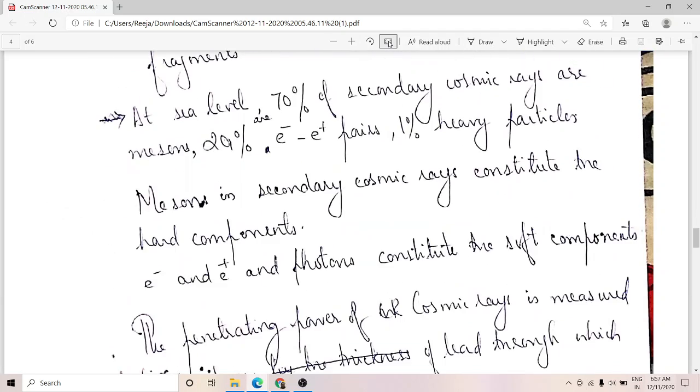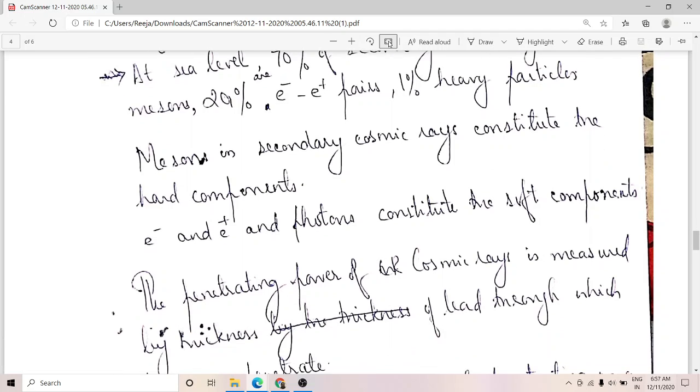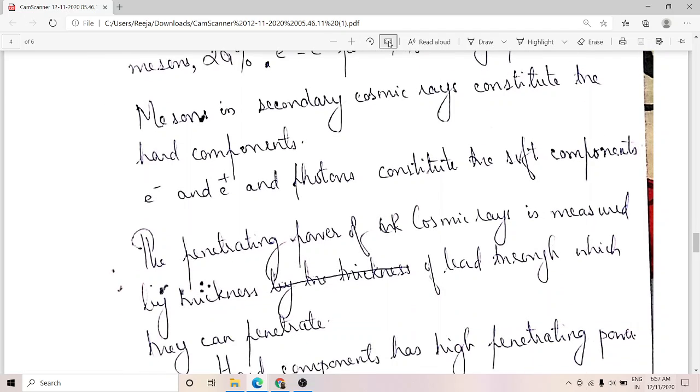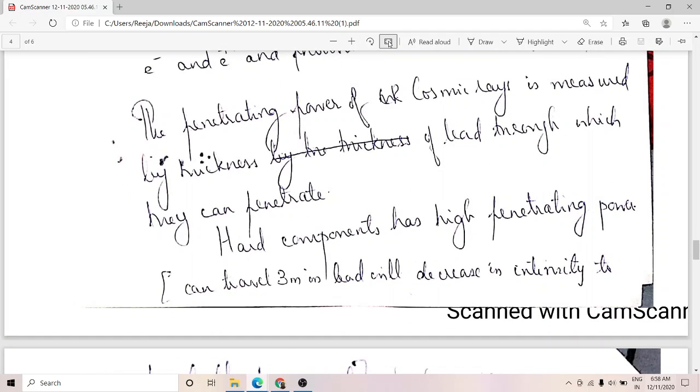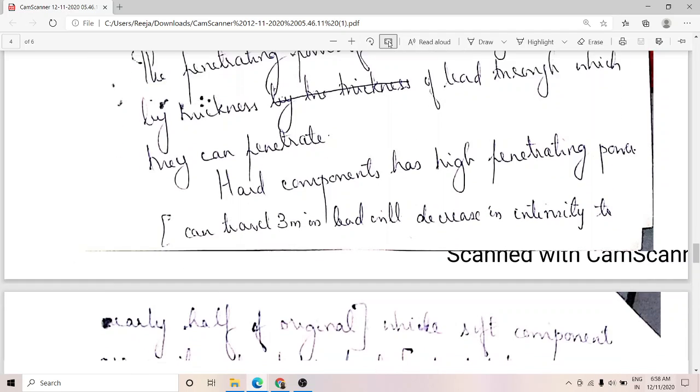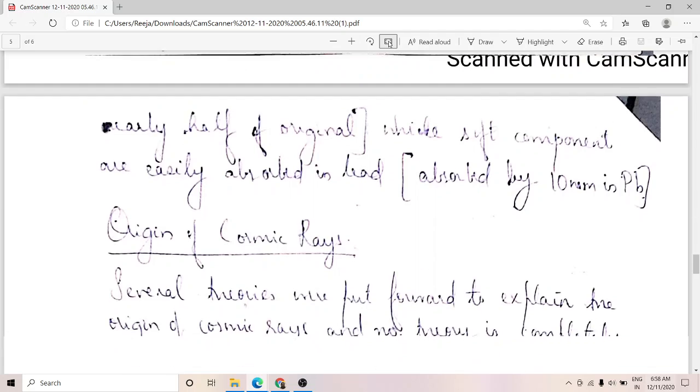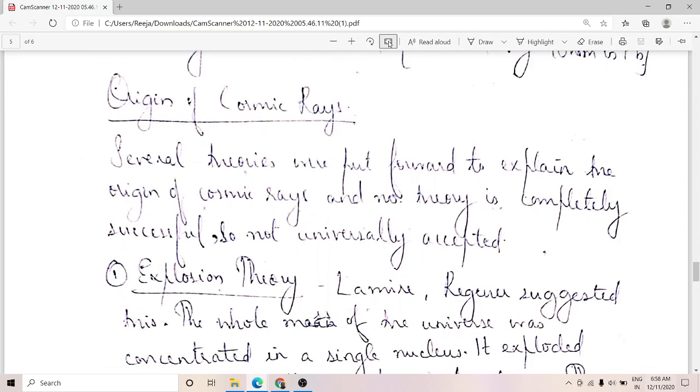At the sea level, 70% of the secondary cosmic rays are mesons, 29% are electrons and positrons, and 1% heavy nuclei. Mesons in the secondary cosmic rays are called the hard components, and electrons and positrons constitute the soft components. The penetrating power of the hard and soft components are also different. Hard components have high penetrating power whereas soft components are easily absorbed.